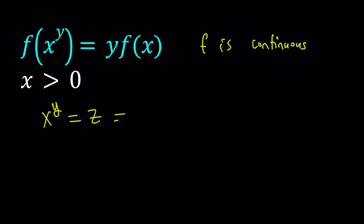And from here we can notice that x is positive, so we can go ahead and take ln of both sides. ln of x to the power y equals ln z. But of course when x is positive, x to the power y is also going to be positive, therefore z is also positive.